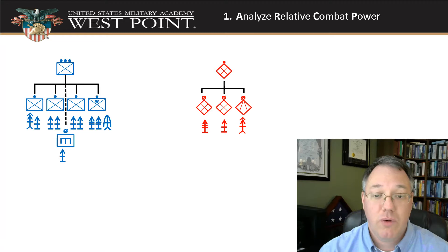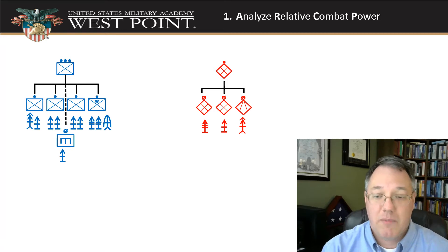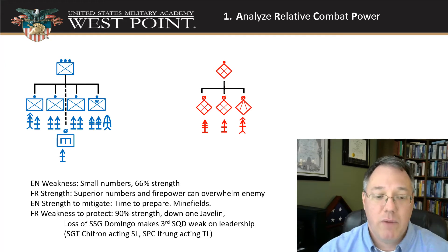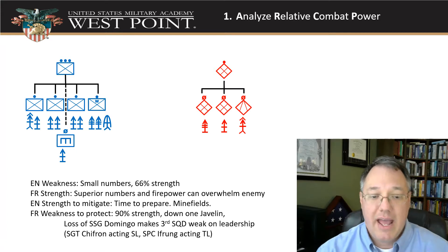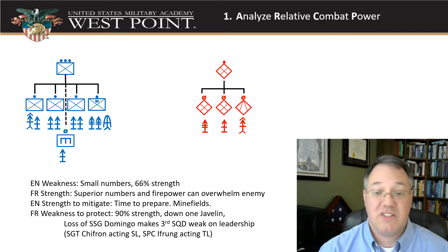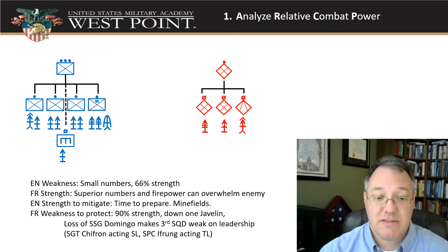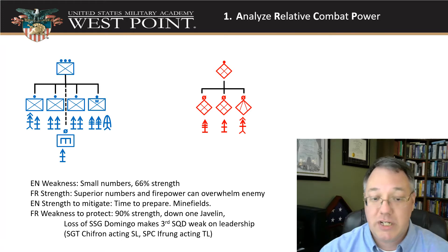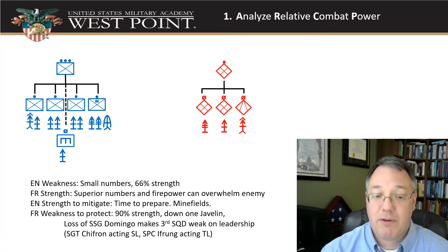Through my mission analysis and situation I came up with my friendly task organization here on the left in blue, and on the right in red was my enemy. I laid out my red checklist to understand how many personnel they had, what weapon systems we think they have. Then I compare the two units — thinking about the enemy's weaknesses, such as smaller numbers and being at 66% strength from doctrine. I compare that against my friendly strengths: superior numbers, firepower that can overwhelm them, and more machine guns.